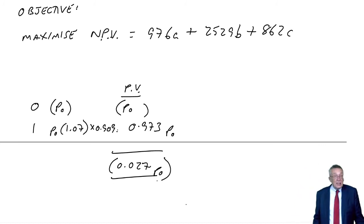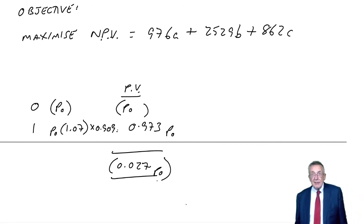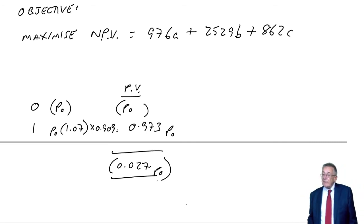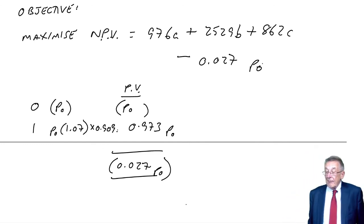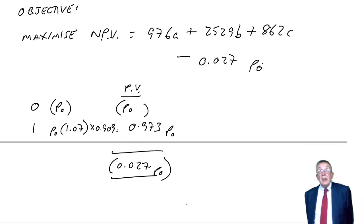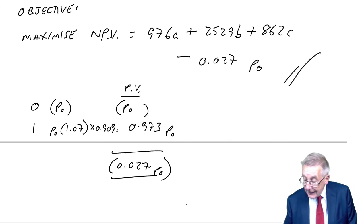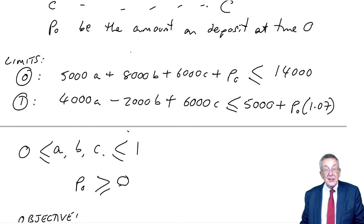But it just might be worth losing money on that to have more money in the first year, because we could perhaps get better investment. But to complete the picture, the overall NPV is 976A plus 2529B plus 862C minus 0.027 P0. And so there's the problem formulated. What we then want to do is work out values for A, B, C and P0 that maximized this equation subject to those limits, those constraints.